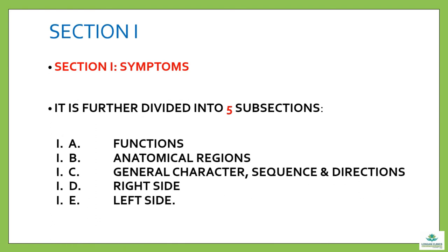Section 1 contains symptoms and is further divided into five subsections: 1a functions, 1b anatomical regions, 1c general character sequence and directions, 1d right side, and 1e left side.